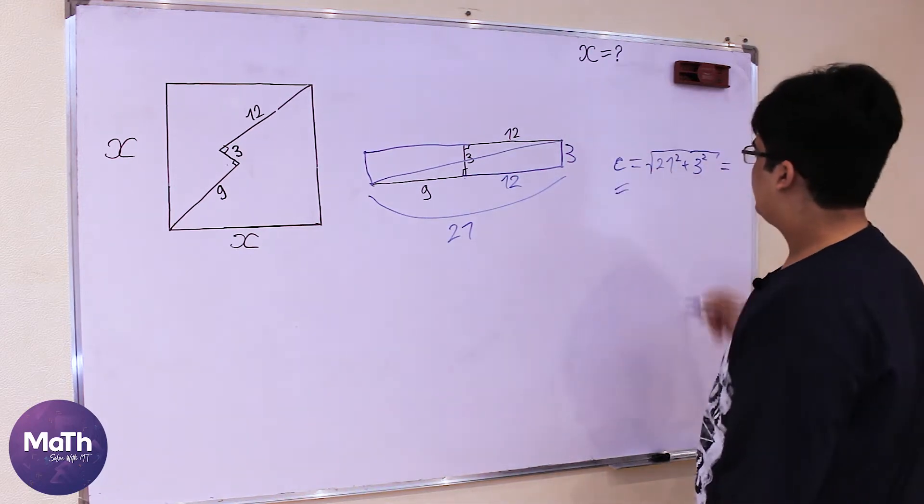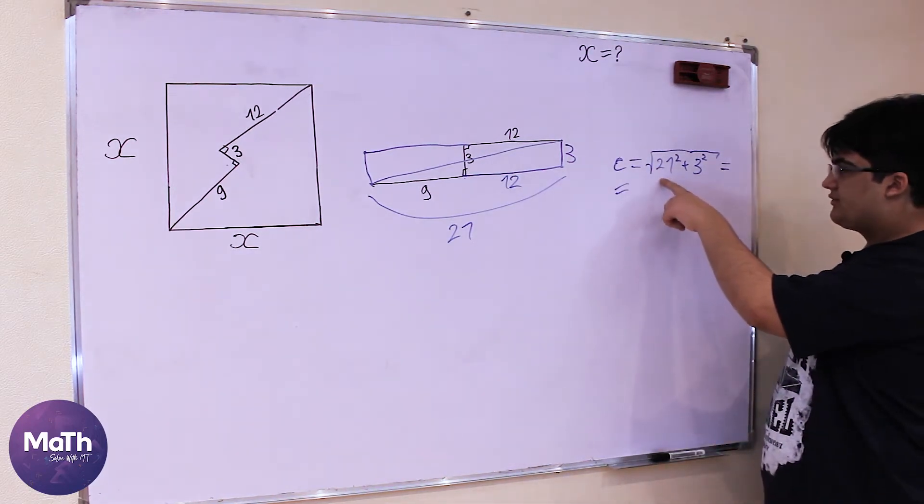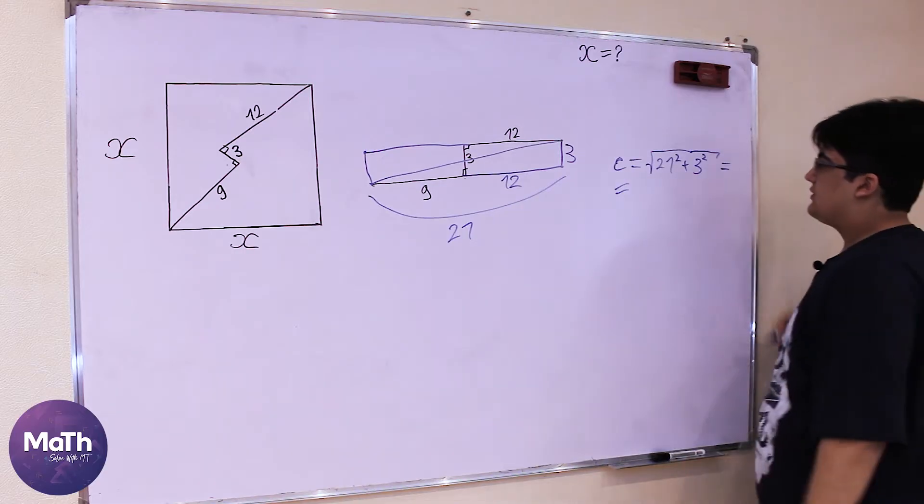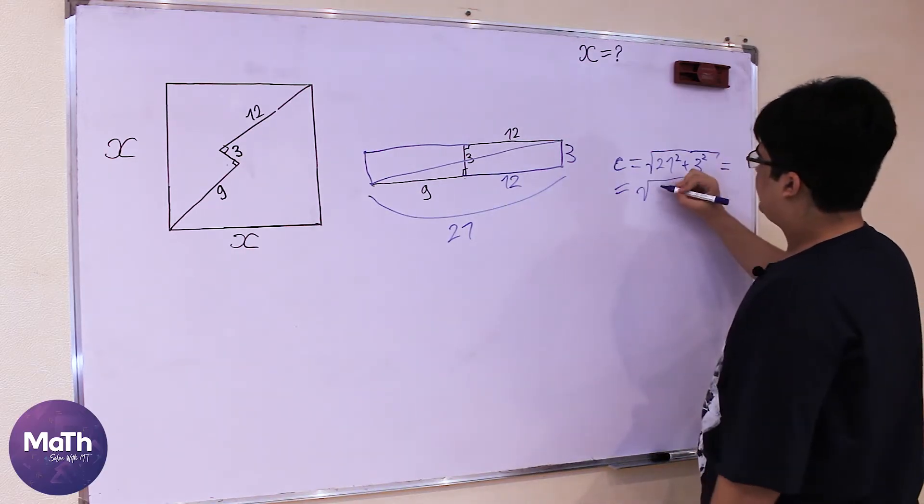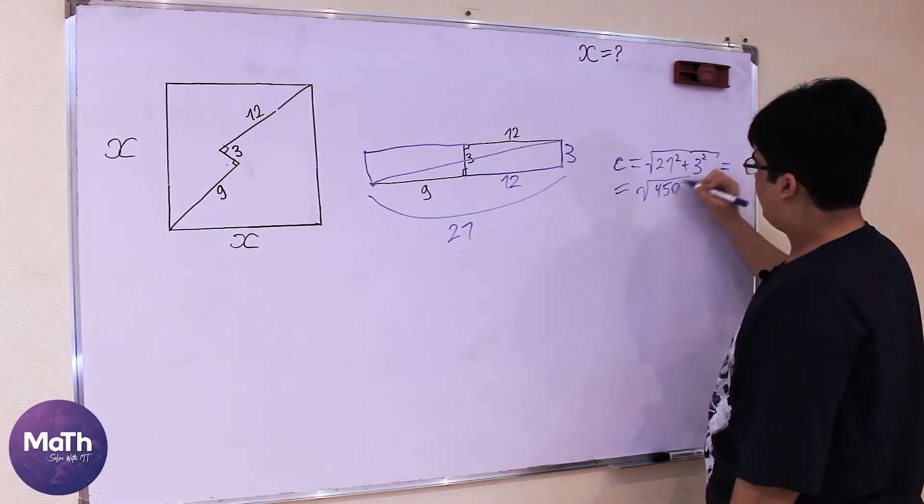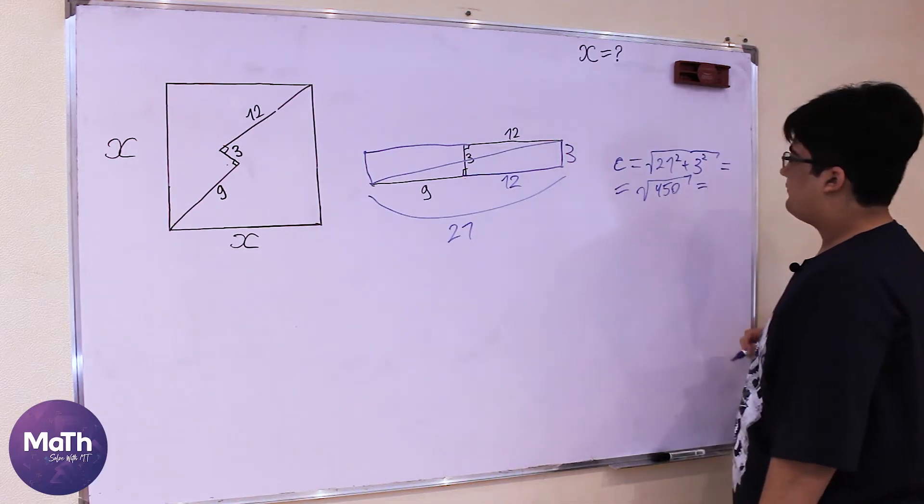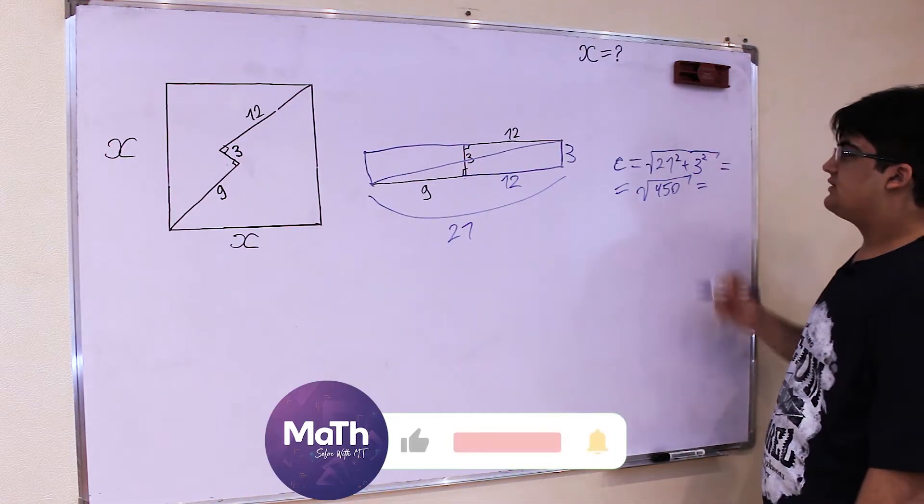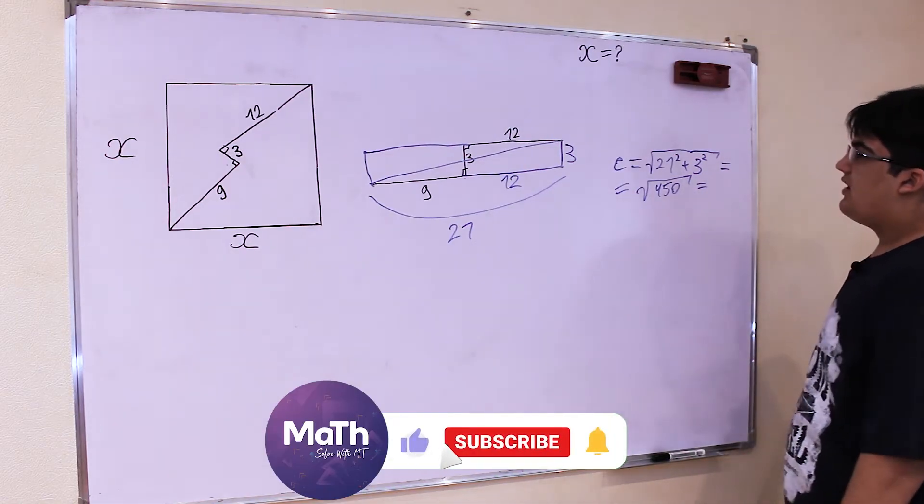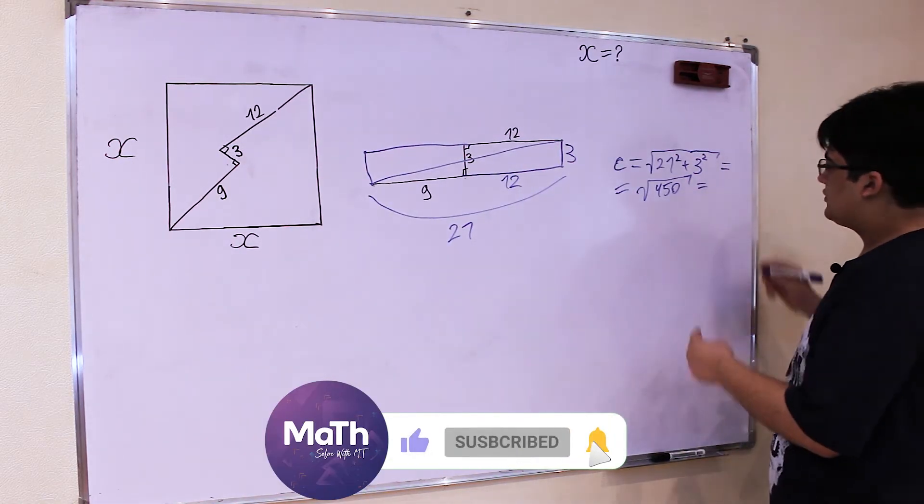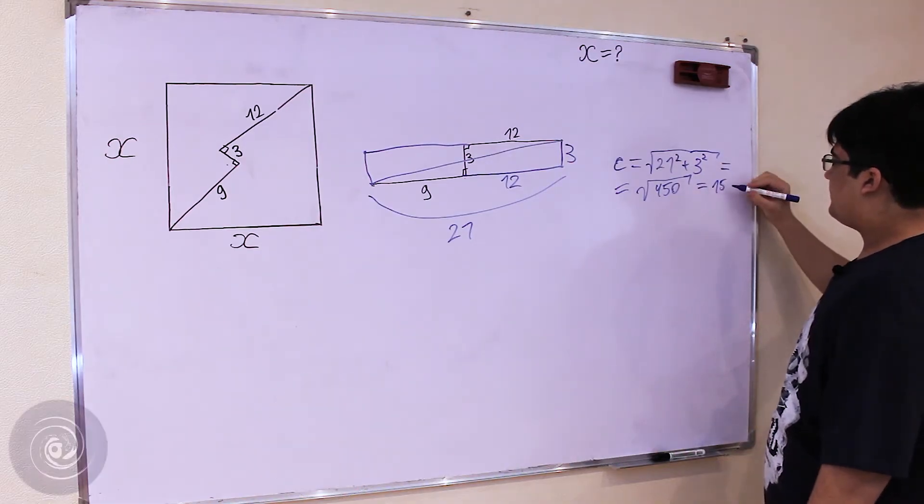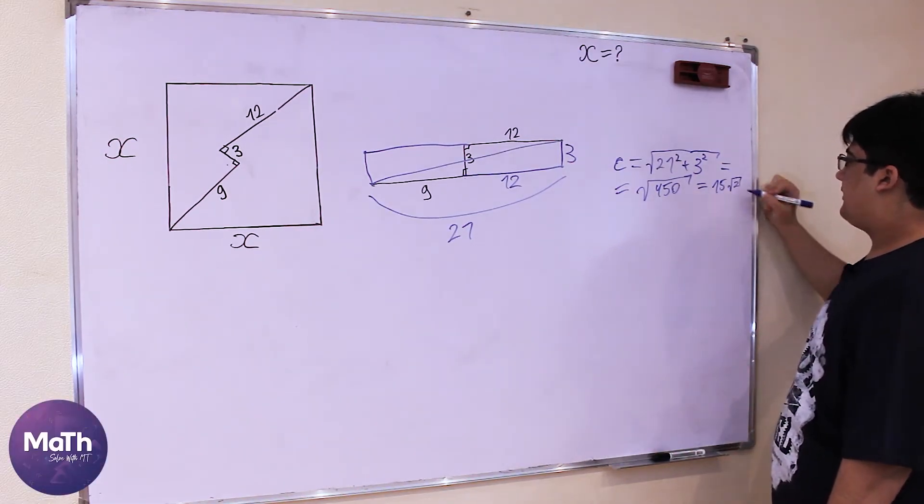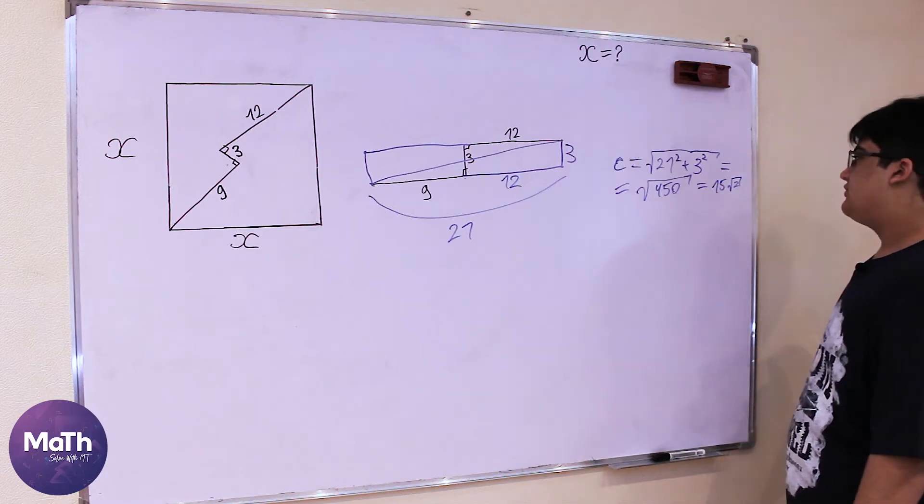That equals, this is 441 and this is 9, so this is 450. And this is 225 multiplied by 2, so this equals 15 times the square root of 2.